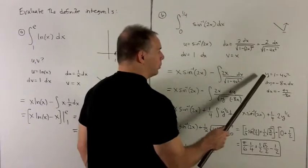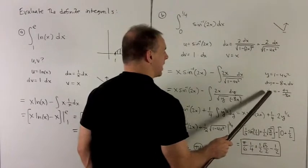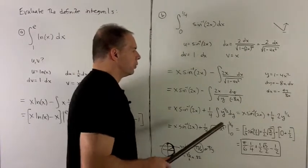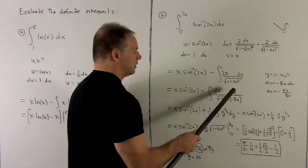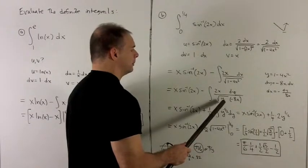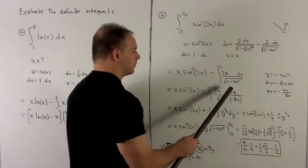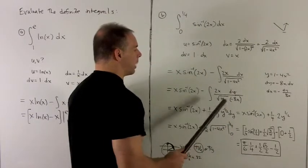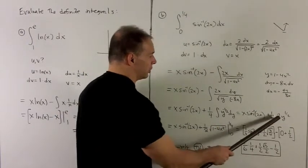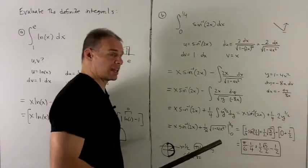Let y equal 1 minus 4x squared. Then dy equals minus 8x dx, so dx equals minus dy over 8x. Substituting in: dx goes to dy over minus 8x, with 2x on top and radical y on the bottom. The x's cancel, leaving a 1/4 with a minus sign that cancels the existing minus, giving us 1/4 times y to the minus 1/2 dy. Integrating: add 1 to the exponent and flip, giving 2y to the 1/2, or 1/2 radical y. Substituting back gives 1/2 radical 1 minus 4x squared.